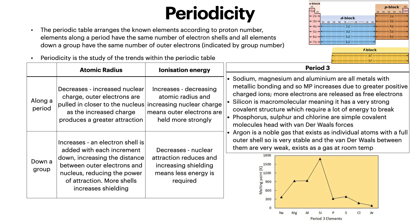Looking directly at period 3: sodium, magnesium and aluminium are all metals with metallic bonding. Melting point increases due to greater positive charge ions and more electrons released as free electrons. Silicon is macromolecular, meaning it has a very strong covalent structure which requires a lot of energy to break. Phosphorus, sulfur and chlorine are simple covalent molecules held with van der Waals forces, which are the weakest type of force. Argon is a noble gas that exists as individual atoms with a full outer shell, so it's very stable and the van der Waals between them are very weak. You can see in the graph the relationship between melting point and period 3 elements as you go along the period.